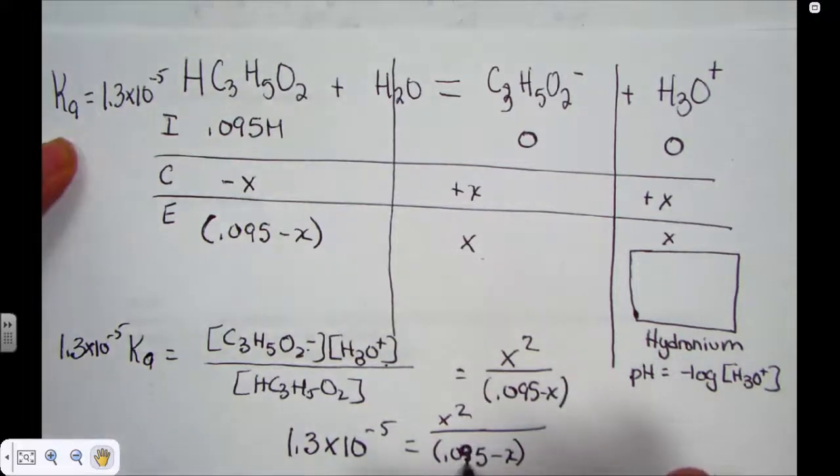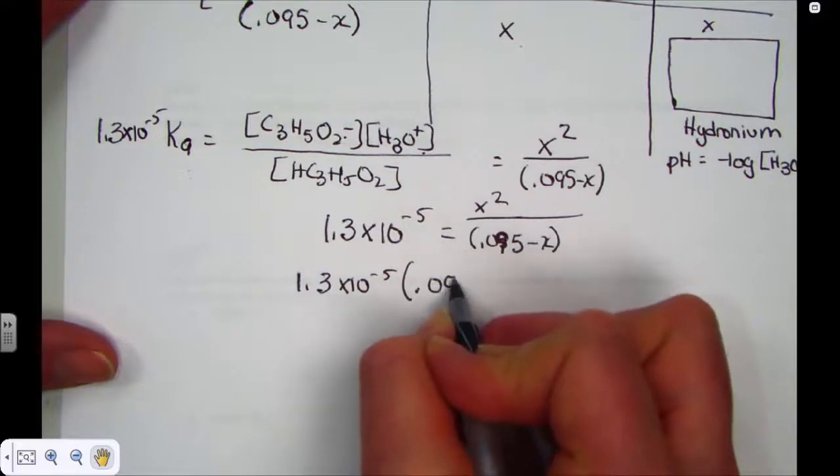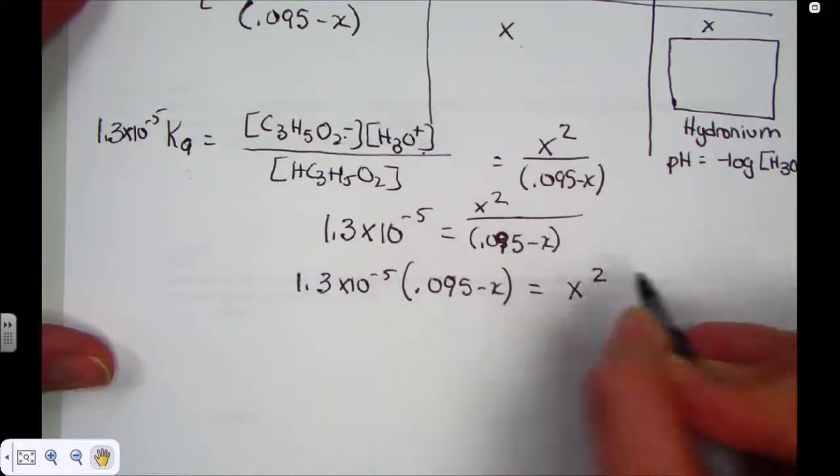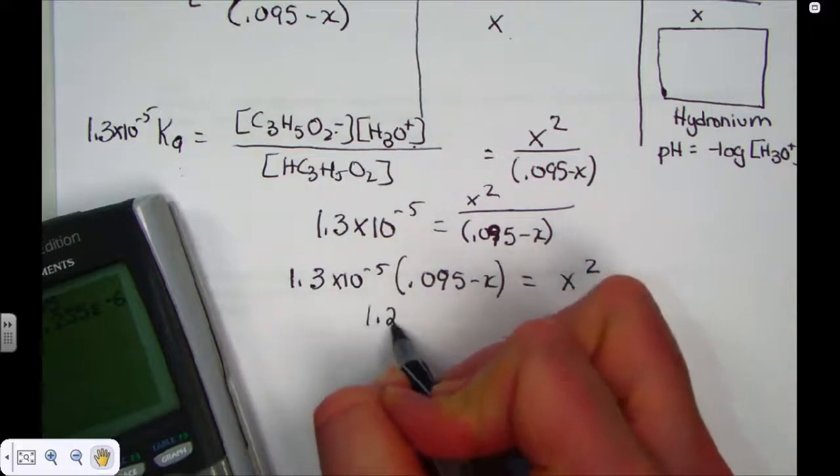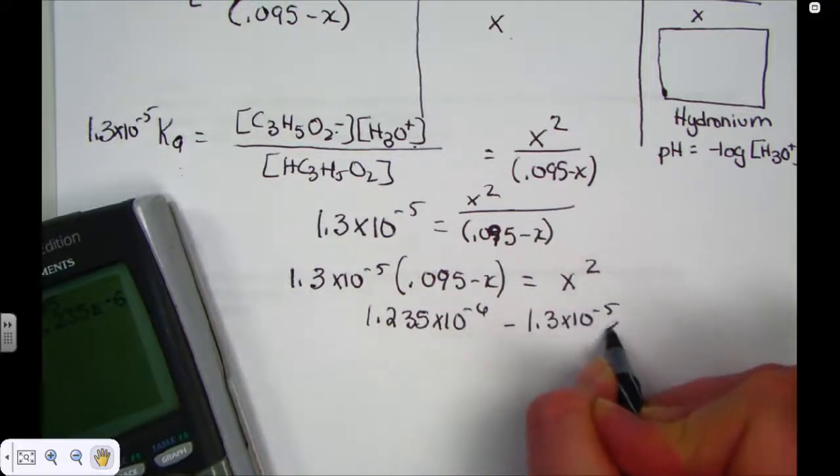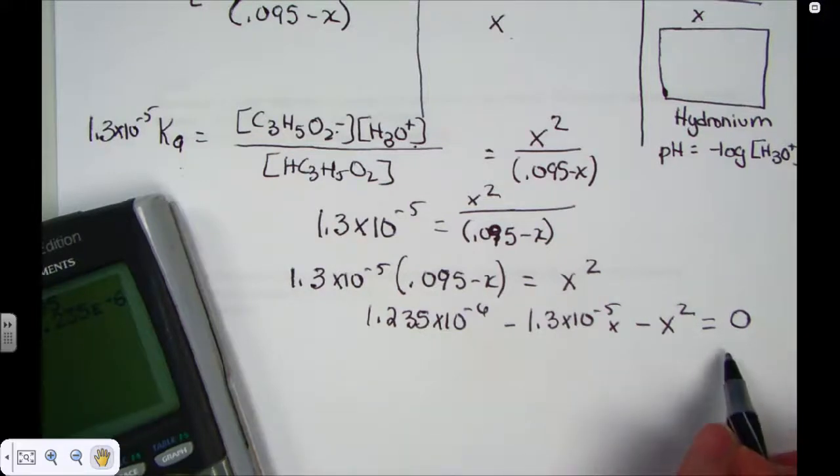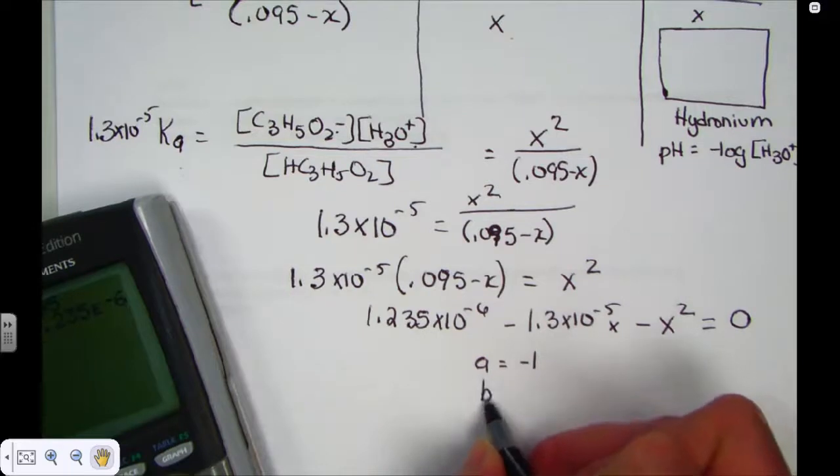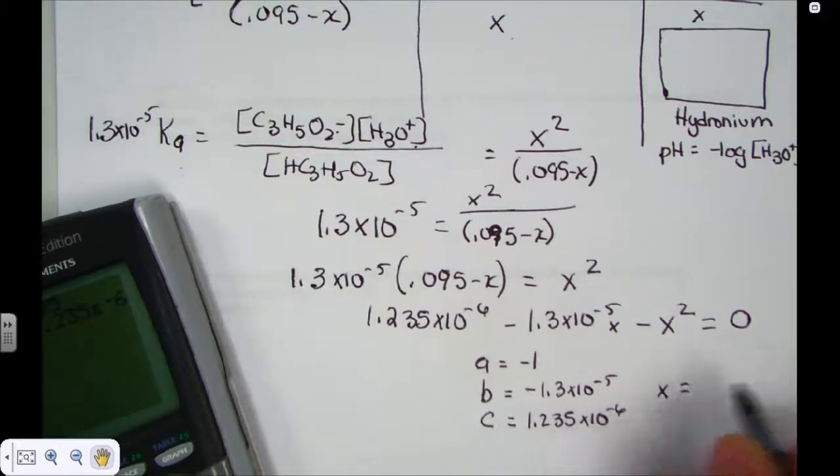So let's get that in a friendly algebraic formula. 1.3 times 10 to the negative fifth is equal to x squared over 0.095 minus x. Of course, we'll need to distribute. So 1.3 times 10 to the negative fifth will be distributed. And that's still equal to x squared. Let me grab my calculator. 1.3e negative 5 times 0.095. And I get 1.235 times 10 to the negative sixth minus 1.3 times 10 to the negative fifth x equal x squared. So why don't I just bring that over minus x squared set equal to 0. Now we have our quadratic equation formula where a is equal to negative 1, b is equal to negative 1.3 times 10 to the negative fifth, and c is equal to 1.235 times 10 to the negative sixth.